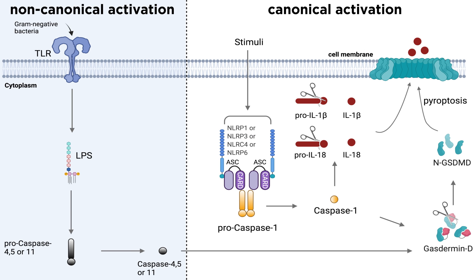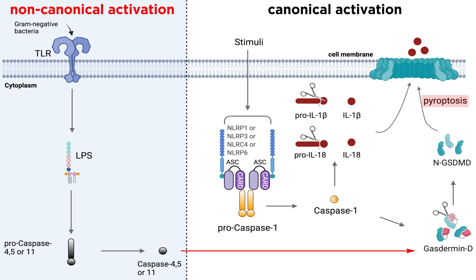There is also what is called the non-canonical inflammasome. In the non-canonical inflammasome, direct cytosolic sensing of intracellular LPS by caspase 11 in mice, or caspases 4 and 5 in humans, can lead to assembly of a macromolecular complex that cleaves gasdermin D, enabling pyroptosis. In some cases, non-canonical inflammasome activation leads to canonical caspase activation that can then cleave Pro-IL-18 and Pro-IL-1 beta.